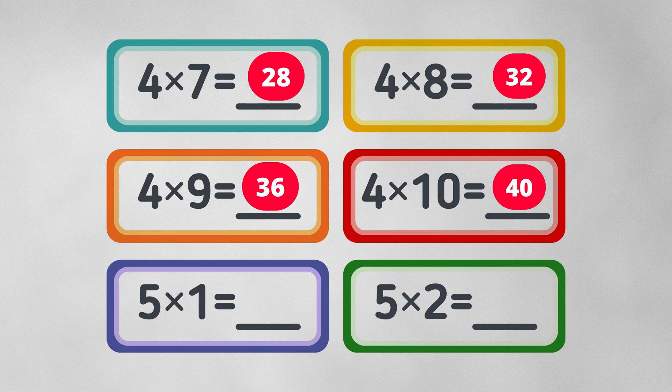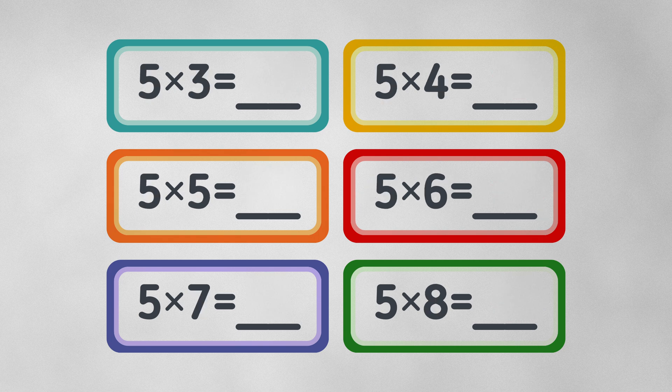Five times one equals five. Five times two equals ten. Five times three equals fifteen. Five times four equals twenty.